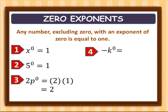Fourth example: negative k raised to zero. We have a negative sign, and k raised to zero is one. So negative times one equals negative one.